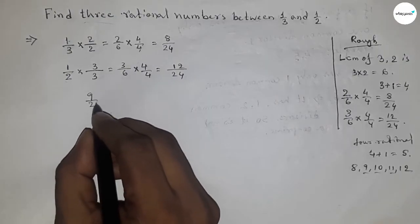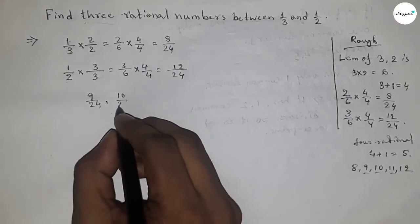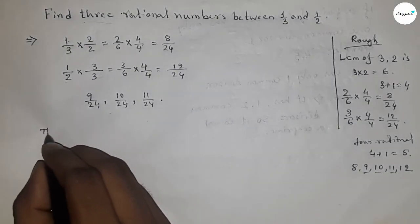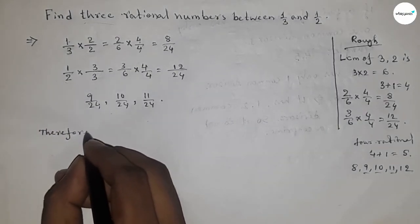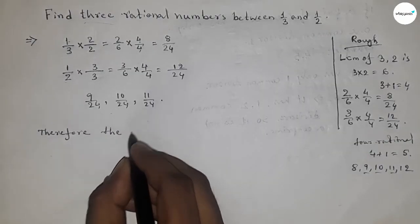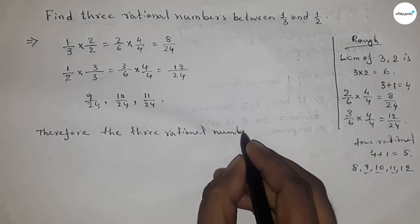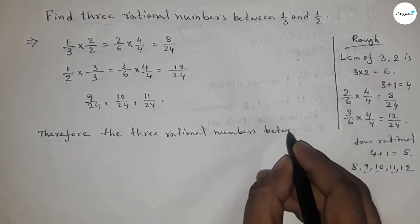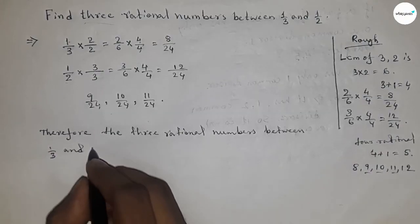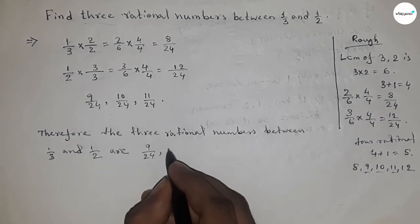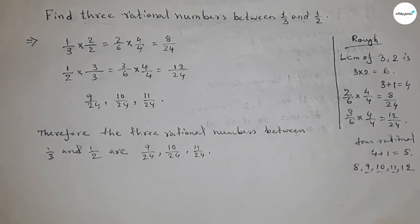These are our required numbers. The three rational numbers are nine by twenty-four, ten by twenty-four, and eleven by twenty-four. Therefore, the three rational numbers between one upon three and one upon two are nine by twenty-four, ten by twenty-four, and eleven by twenty-four. This is the process. That's all.